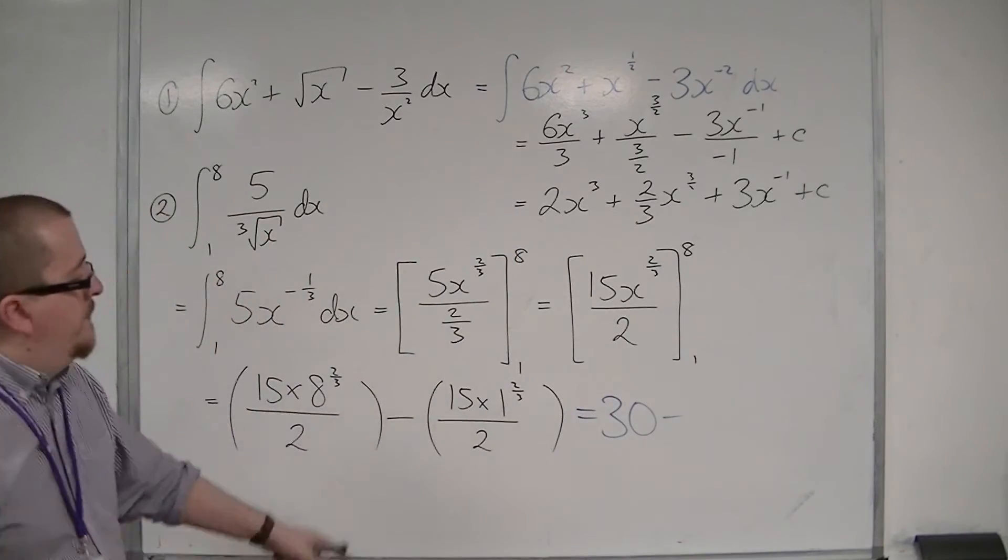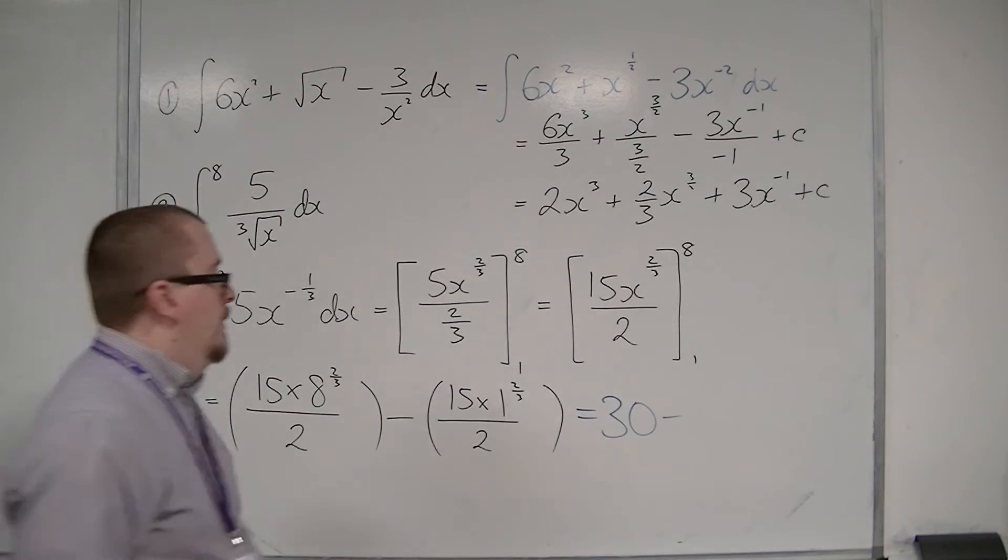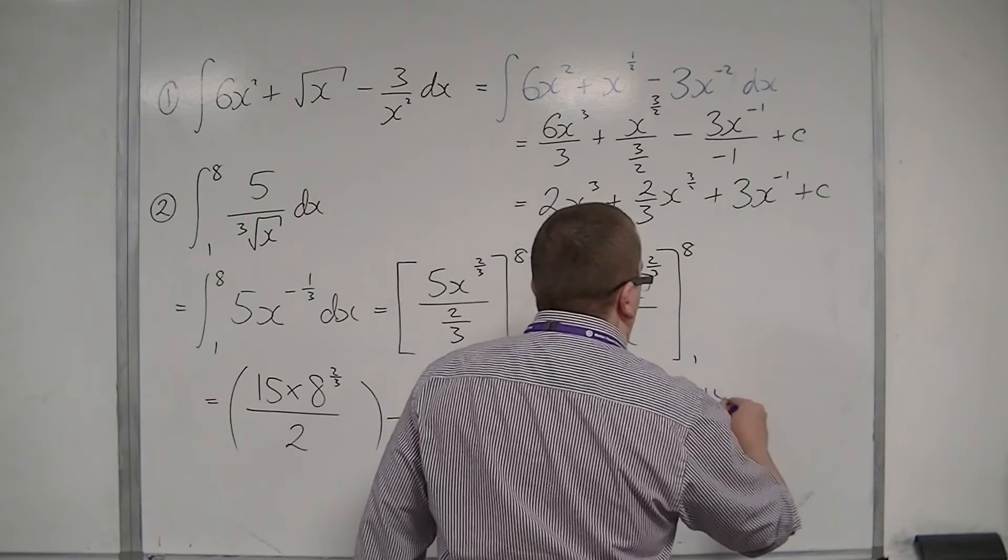And then the second bracket, we've got 15 times 1 to the 2 thirds, so that's just 15 over 2. So minus 15 over 2, or 15 halves.